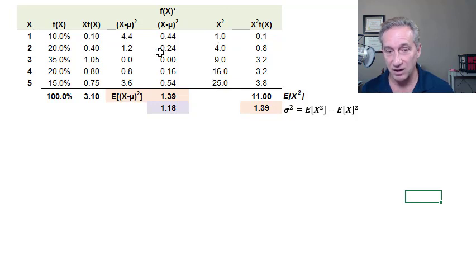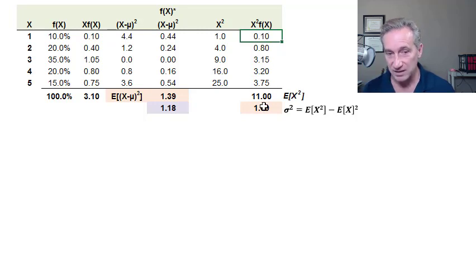So in this case, we have a column for x squared. Here x is 1, 1 squared is 1, x of 2, 2 squared is 4, x of 3, 3 squared is 9. So here's the values of x squared. Here we've just multiplied them by the probabilities. So we have 10% times x squared is 0.1, 20% times x squared is 0.8. So that the sum of this column in this case is 11. And so you'll see this is 11 in this case is the expected value not of x, but of the variable x squared.